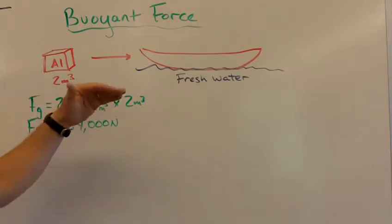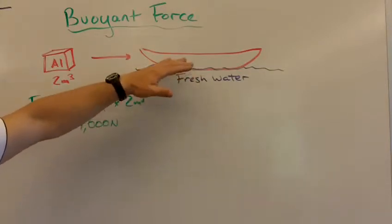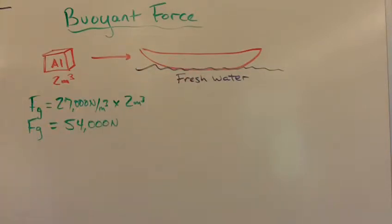But we can manipulate the shape of it so that it displaces more water, in this case fresh water, and we can figure out how much water it will displace and what the buoyant force will have to be. And the buoyant force will have to be 54,000 newtons in order for this thing to float, or greater.